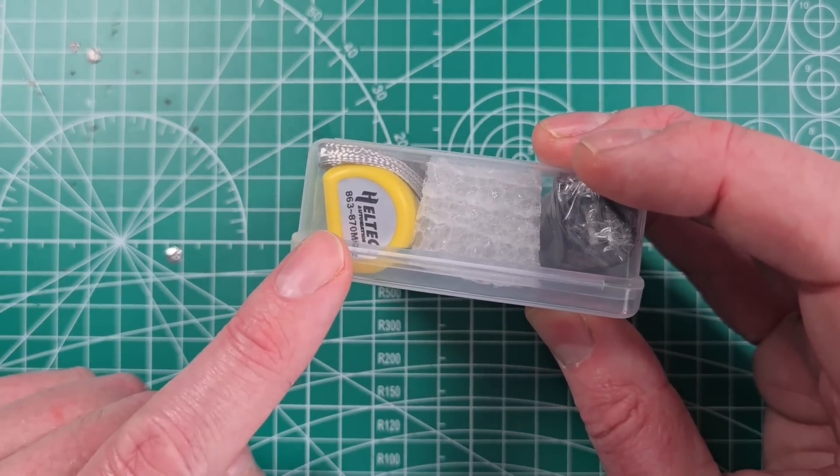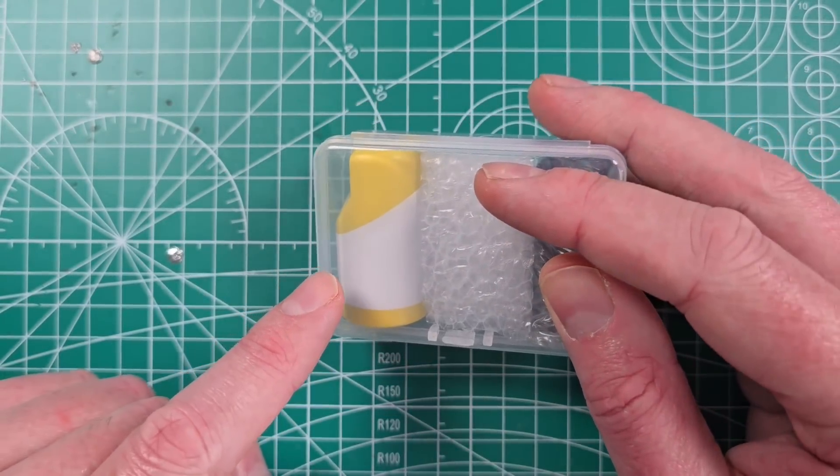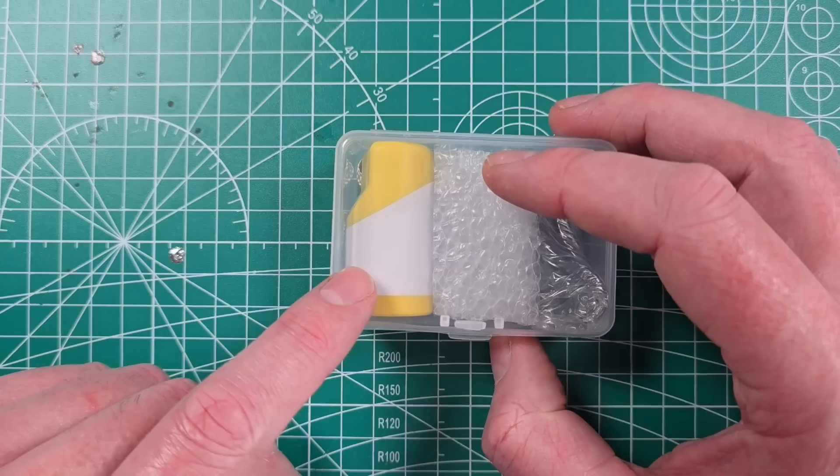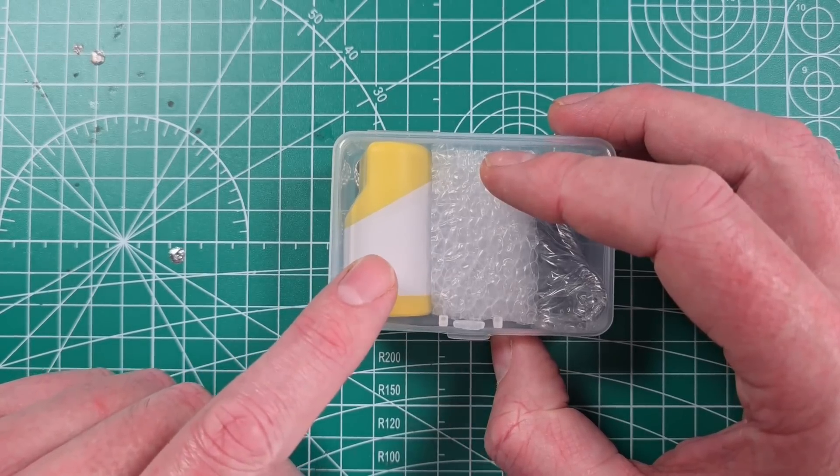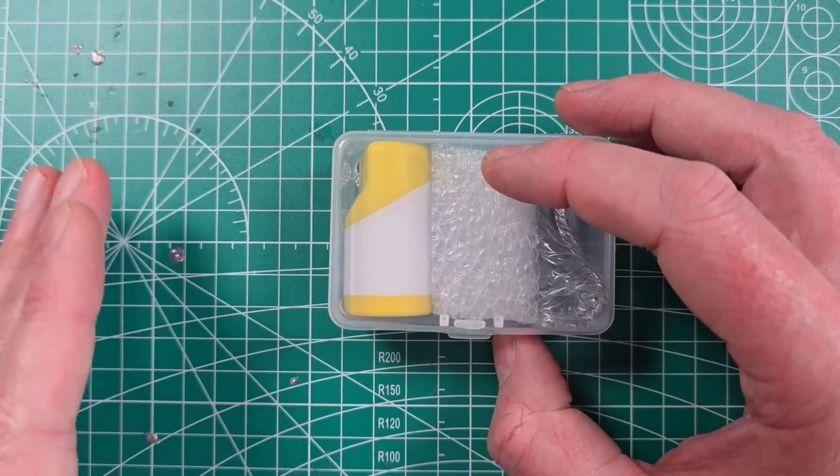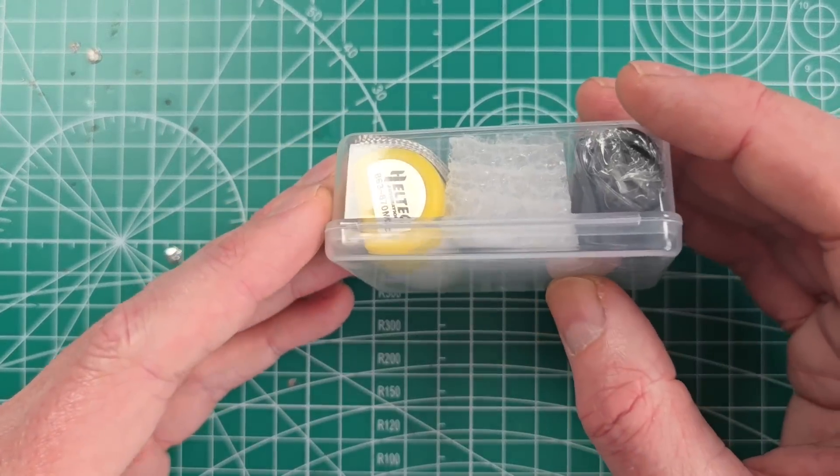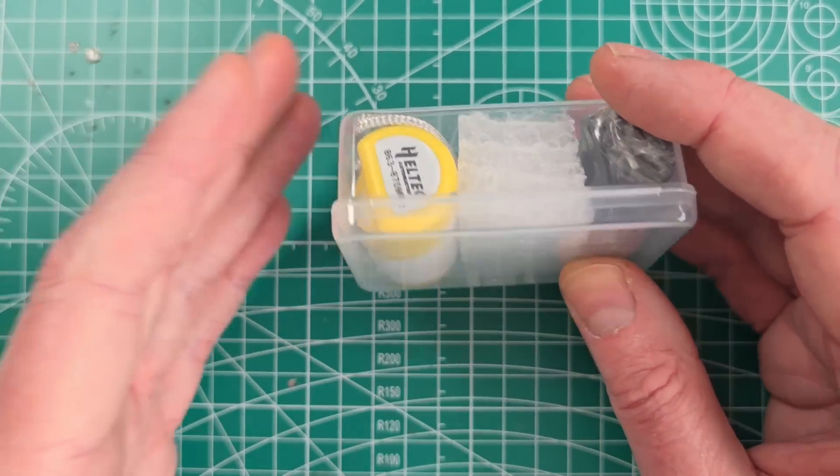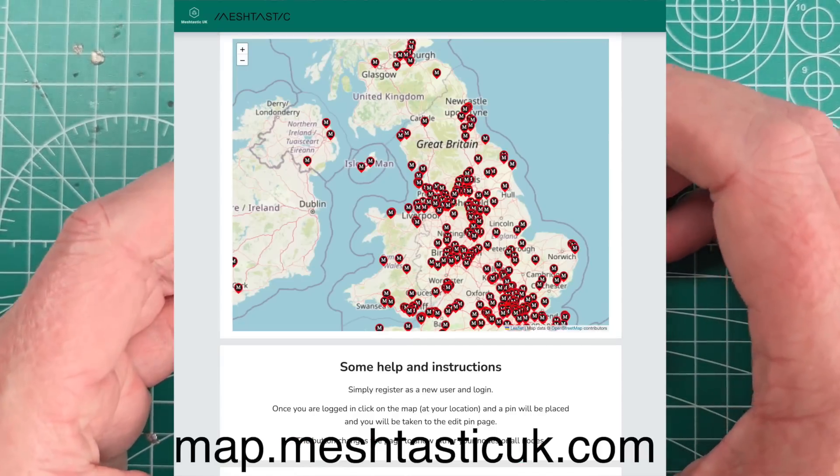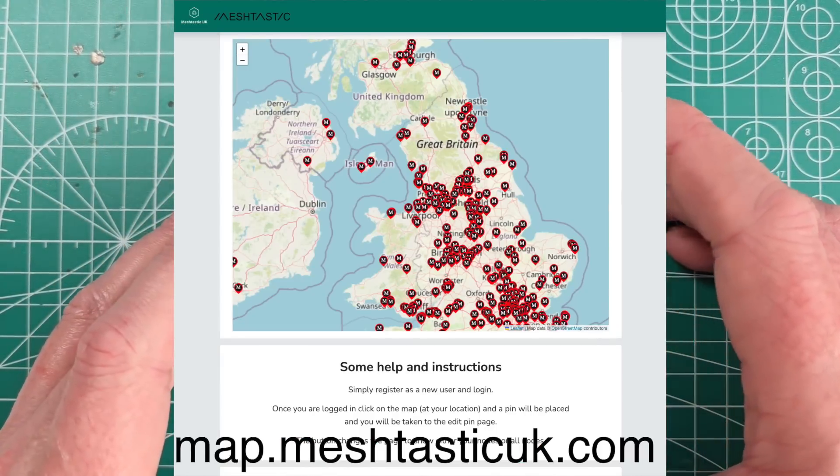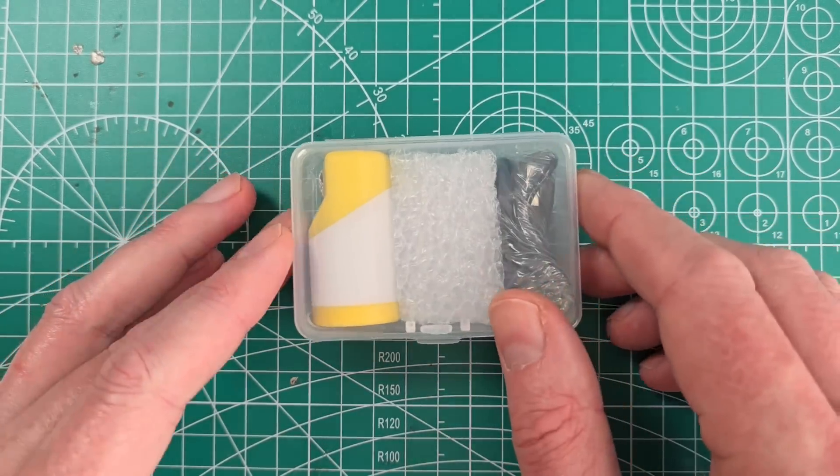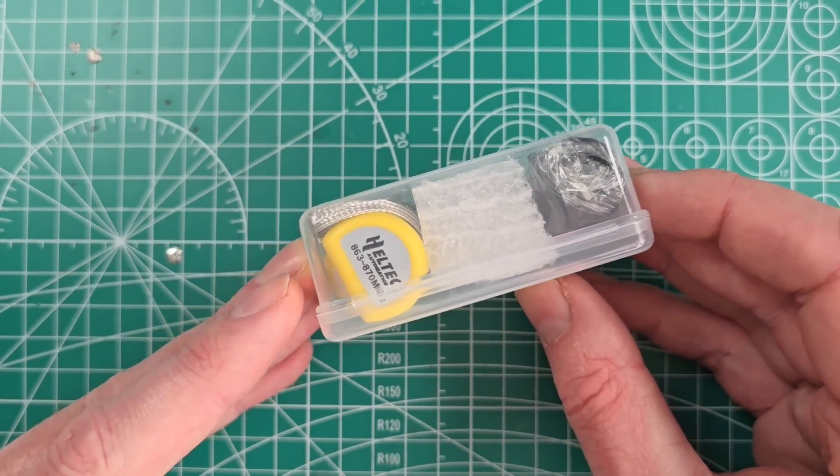But the cool thing about MeshTastic is that it uses a mesh networking technique. So the more devices you've got of these in an area, they'll all mesh together and your messages get passed through. So the more of these devices out there, the better, and the network in the UK at least has taken off massively at the moment. You can look for more videos on that, especially on this channel. I'll link some more below if you want to learn more.